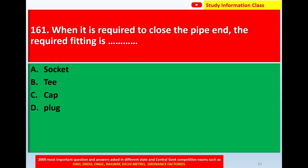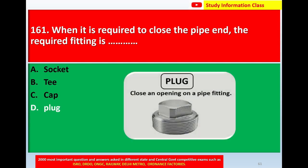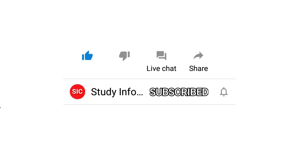Question number 161: When it is required to close the pipe end, the required fitting is — option A socket, option B T, option C cap, option D plug. Correct answer is option D, plug. A plug closes an opening on a pipe fitting. So for question number 161, the correct answer is option D, plug.